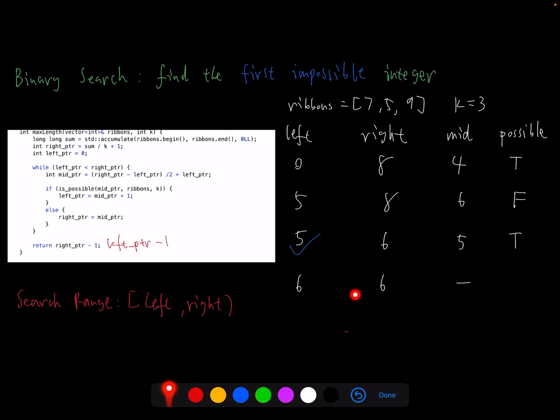At this time, right pointer is equal to left pointer. We will quit this while loop. Then we will return left pointer minus one, which is 5. And this is the correct answer to this problem.